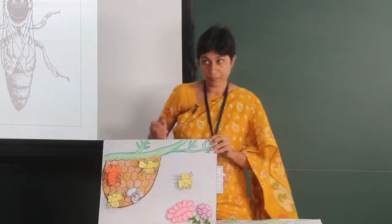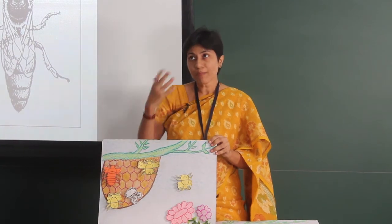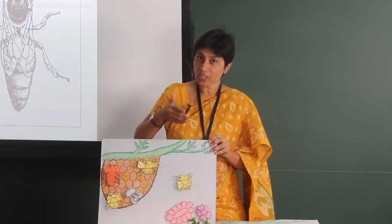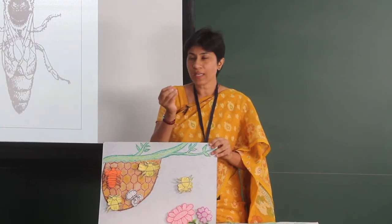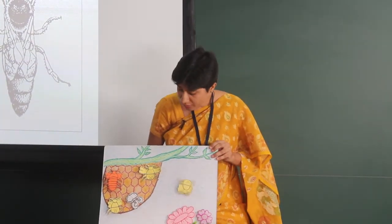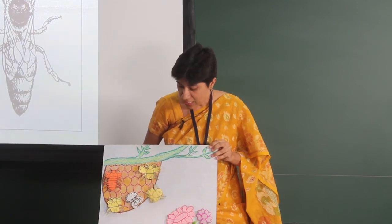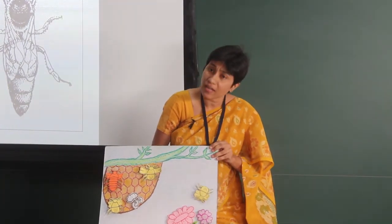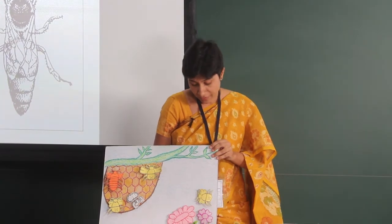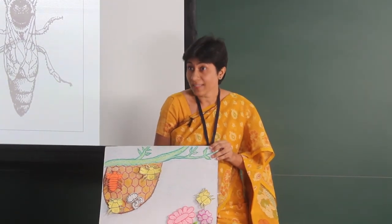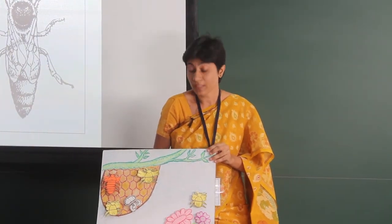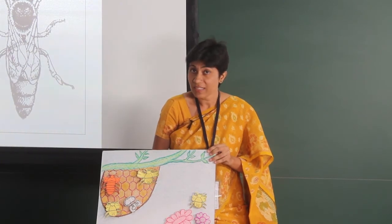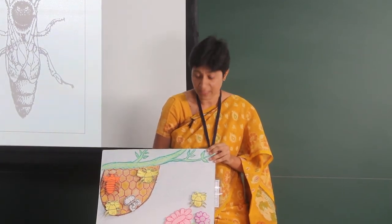The worker bee is the essence of the beehive — there are many worker bees, and no worker bees means no beehive. The worker bees take care of the beehive, they take care of the baby bees, and they move from flower to flower in search of nectar. When they find a flower with nectar, they do a special dance — they are very selfless creatures — to let other bees know: come, here is a flower with nectar, let's collect it, go back to the beehive and make honey.